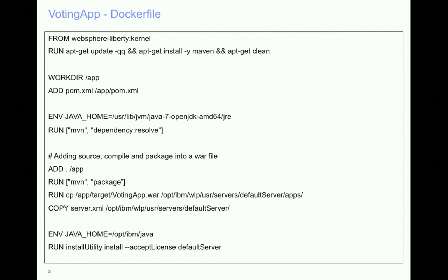This is the Dockerfile used for building the voting app image. The voting app application runs in a WebSphere Liberty Docker container, the lightweight application server from IBM. Here we can see that it uses the WebSphere Liberty kernel as the base image and then the required features are installed using the install utility command.